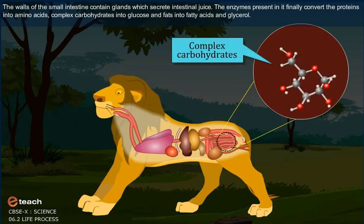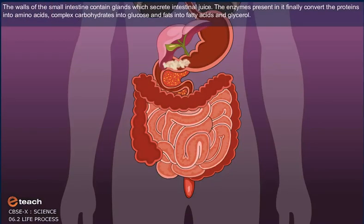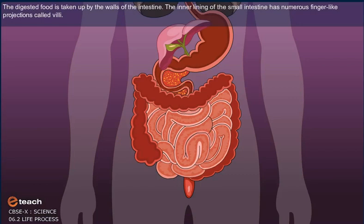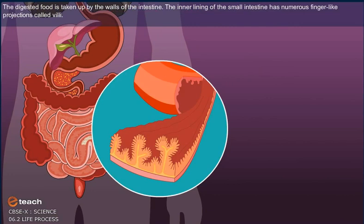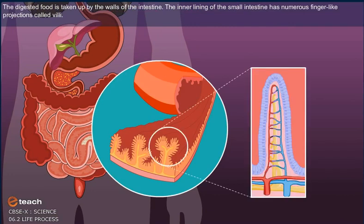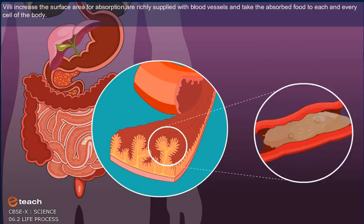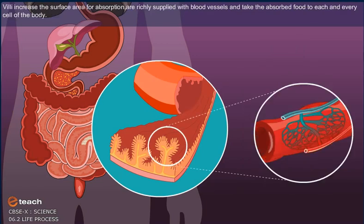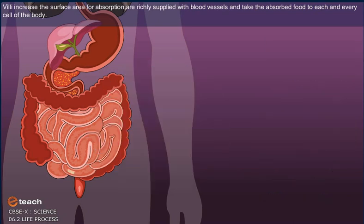The enzymes present in intestinal juice finally convert proteins to amino acids, complex carbohydrates into glucose, and fats into fatty acids and glycerol. The digested food is taken up by the walls of the intestine. The inner lining of the small intestine has numerous finger-like projections called villi which increase the surface area for absorption and are richly supplied with blood vessels that take the absorbed food to each and every cell of the body.